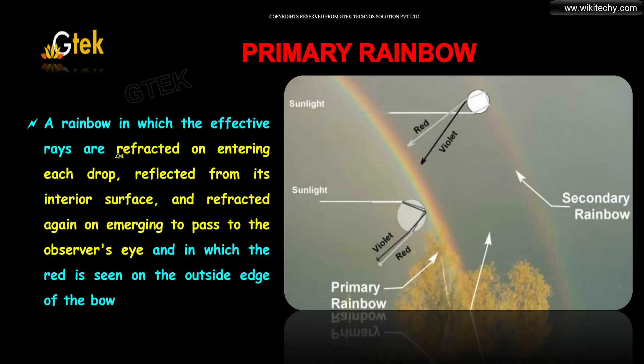A rainbow in which the effective rays are refracted on entering each drop, reflected from its inner surface, and refracted again on emerging to pass to the observer's eye, and in which the red is seen on the outside edge of the bow.